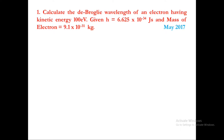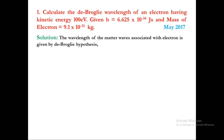Now let us solve this problem step by step. The wavelength of the matter waves associated with an electron is given by de Broglie hypothesis: lambda is equal to h divided by p, where h is Planck's constant and p is the momentum of that particle. In this case it is an electron. In the place of p, we write square root of 2mE, which represents the momentum of the electron derived from the kinetic energy formula p squared divided by 2m.